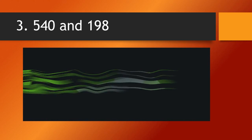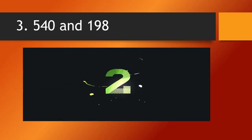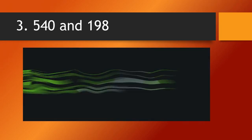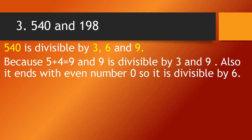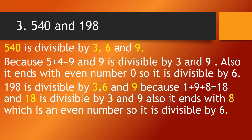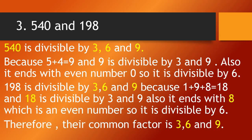Third set of numbers: 540 and 198. 540 is divisible by 3, 6, and 9 because 5 plus 4 equals 9, and 9 is divisible by 3 and 9. Also, it ends with even number 0, so it is divisible by 6. 198 is divisible by 3, 6, and 9 because 1 plus 9 plus 8 equals 18, and 18 is divisible by 3 and 9. Also, it ends with 8, which is an even number, so it is divisible by 6. Therefore, their common factors are 3, 6, and 9.